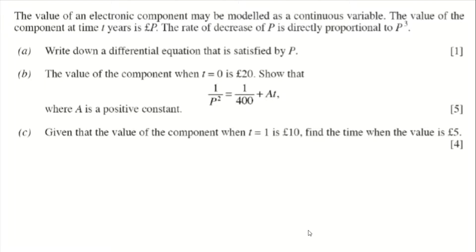Main task question one. The value of the component at time t is p; the rate of decrease of p is proportional to p cubed. The rate of decrease of p is a rate of change, so that's dp/dt, directly proportional to p cubed. Because it's a decrease this is going to be negative, so dp/dt equals negative kp³.